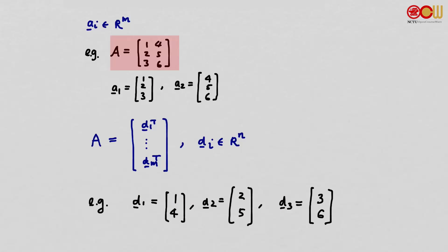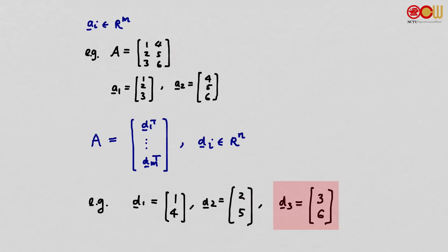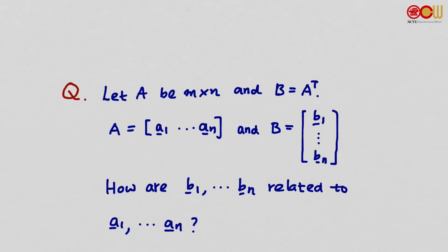Using this example: the first row vector is 1, 4 — so d_1^T = [1, 4], meaning d_1 = [1, 4]^T. Then d_2 corresponds to the second row, so d_2^T = [2, 5] and d_2 = [2, 5]^T. And d_3 corresponds to the third row: d_3 = [3, 6]^T.